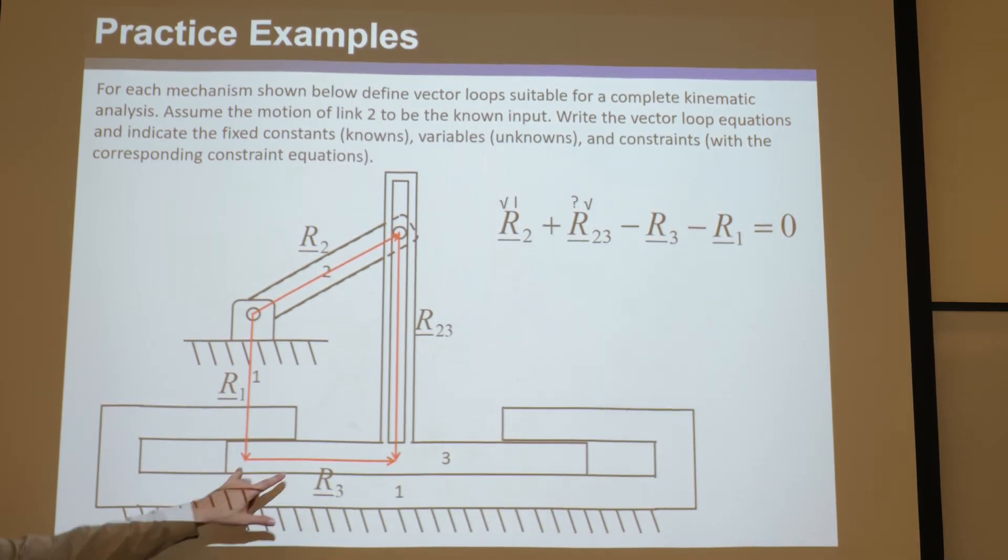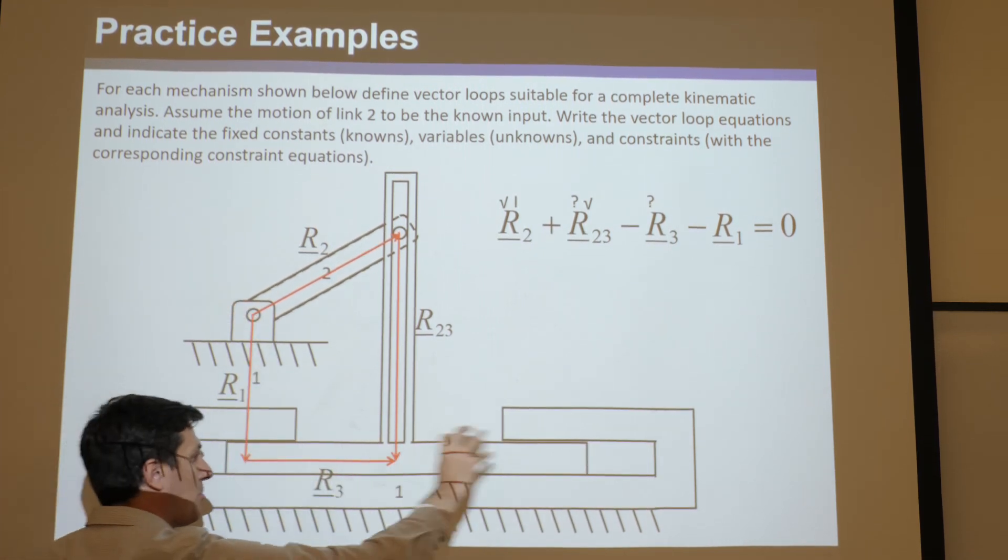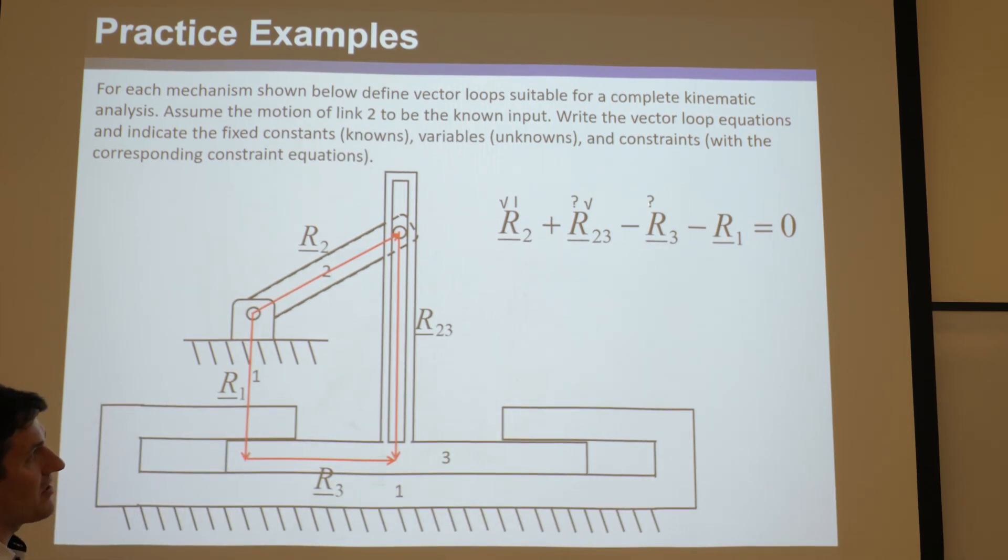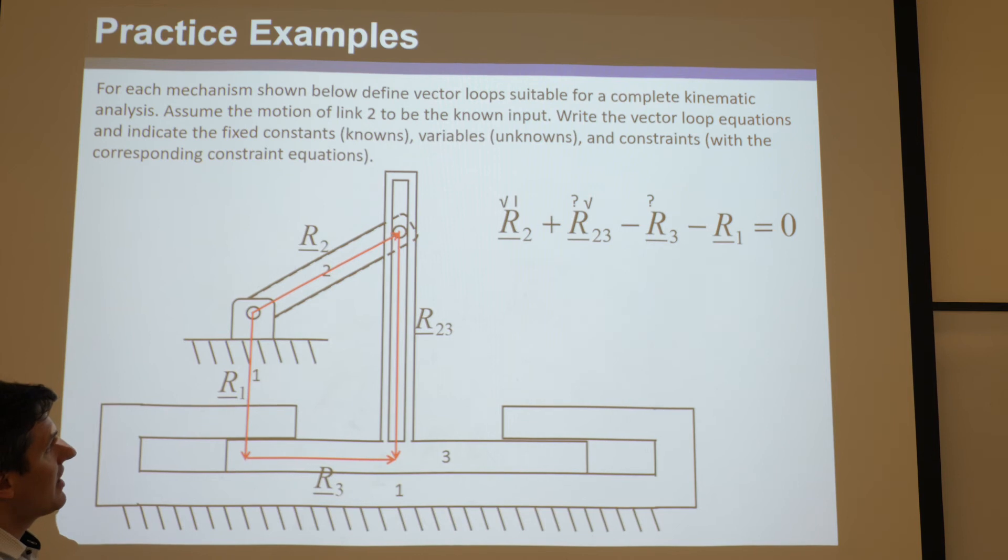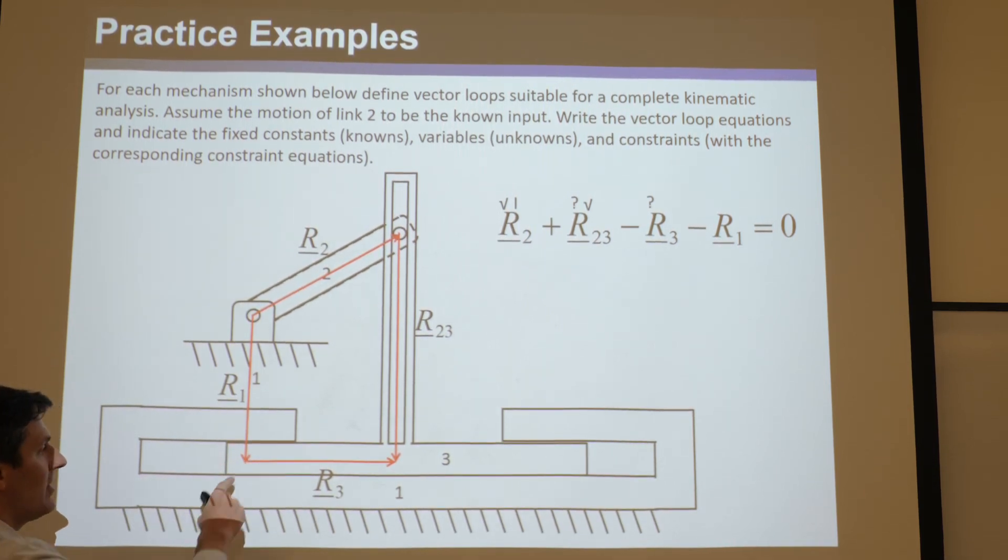Okay, do we know the magnitude of this? No, that better be a question mark. That's obviously what we care about. I think this mechanism, they have a motor on here, and the output is this translation, and we want to solve for that, so that's what we care about. You better have a question mark over there. And then do we know the angle? Because we put the tail back here, the angle would be zero.